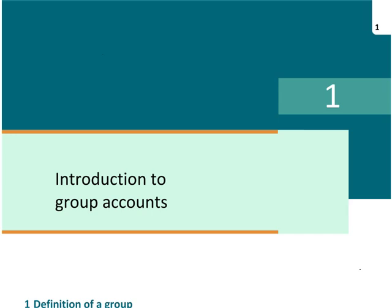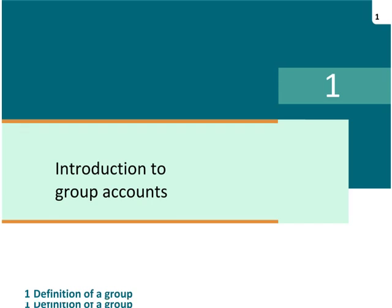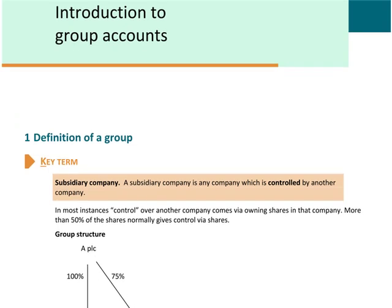Or instead, a quicker way to grow my business would be to acquire shares in another company. And if I acquire a controlling interest in another company, we say that this company is a subsidiary company. So if my company buys enough shares in another company to control it, then we call it a subsidiary.